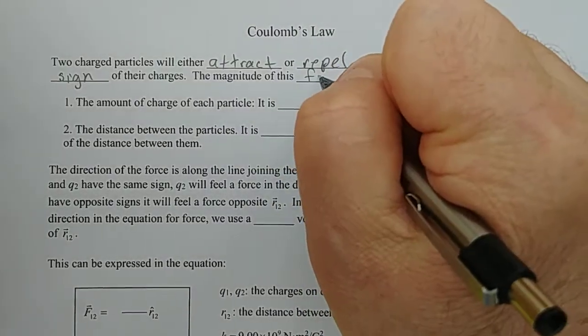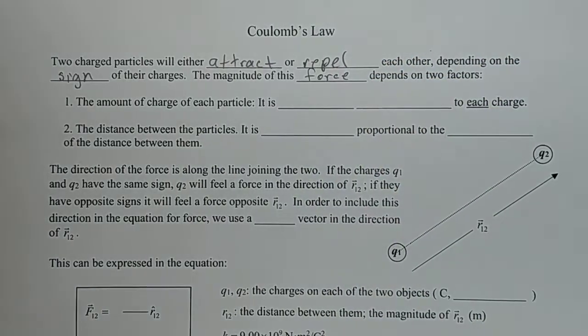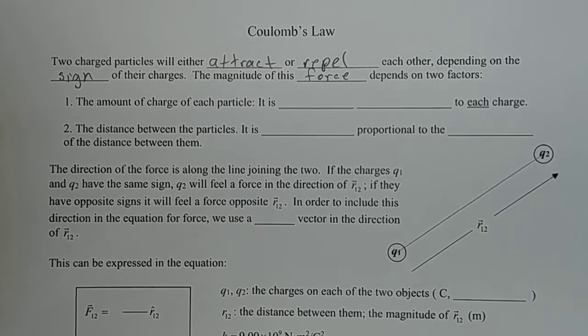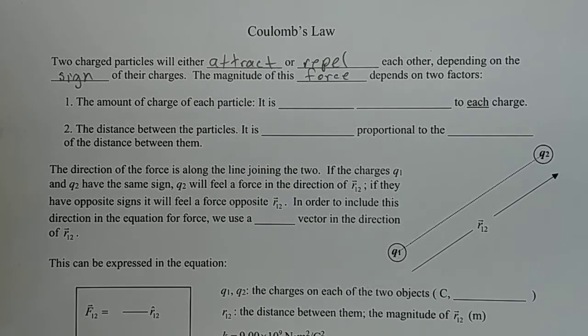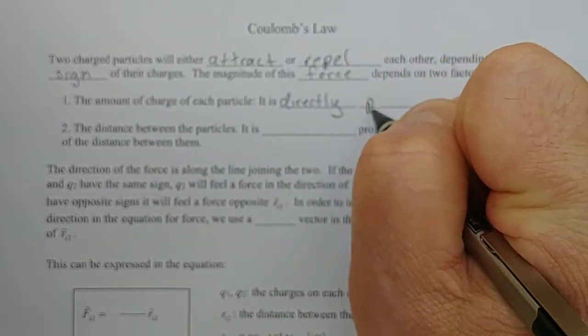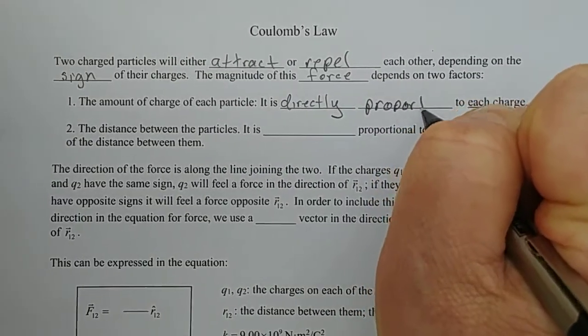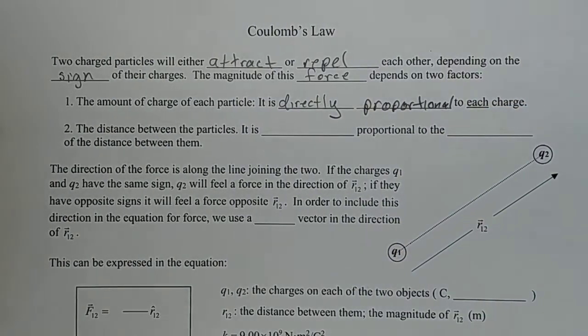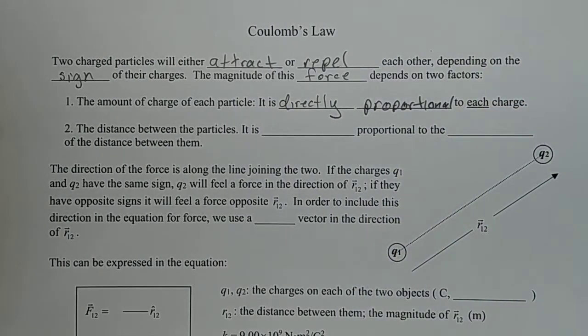The magnitude of this force, attraction or repulsion, depends on two things. If something has more charge, it's going to feel a stronger force. And if it has twice as much charge, it's going to feel twice as much force. So the amount of charge on each particle matters and it is directly proportional to each charge. Both charges matter. If you double either one of them, it's going to be twice as much force.